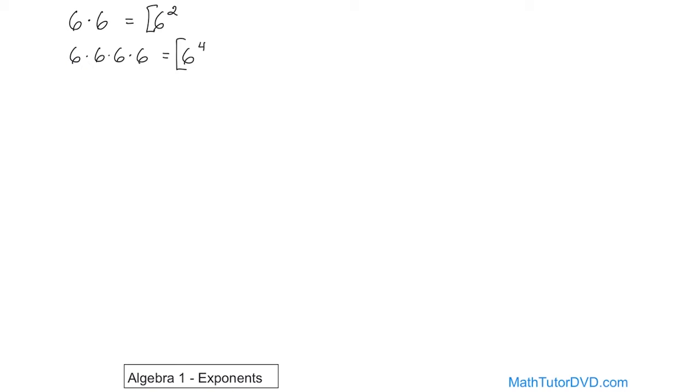And that's why we use exponents. It's basically just a shortcut way to write down multiplication. That's all it is. So just take a few more examples. What if you had 7 times 7 times 7? How would you write that as an exponent? Well, the number we're multiplying is 7, and we're doing it 3 times. So the exponent is to the power of 3. 7 to the power of 3. That's the final answer.